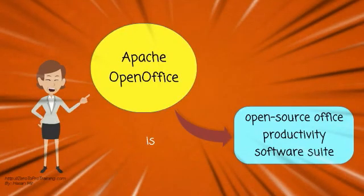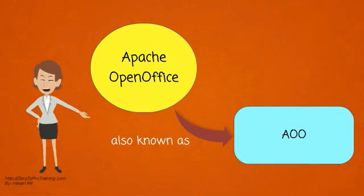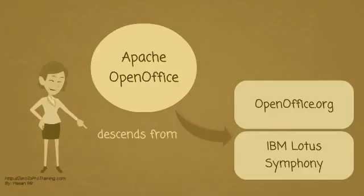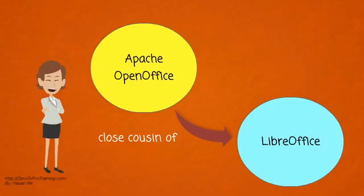Apache OpenOffice is an open source office productivity software suite. It is also known as AOO. The software is developed and maintained by Apache Software Foundation. It descends from OpenOffice.org and IBM Lotus Symphony. Now it is a close cousin of LibreOffice.